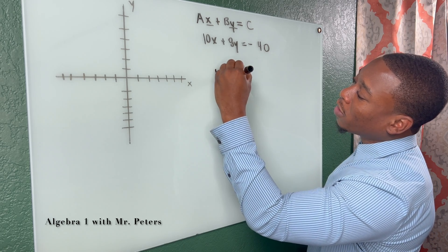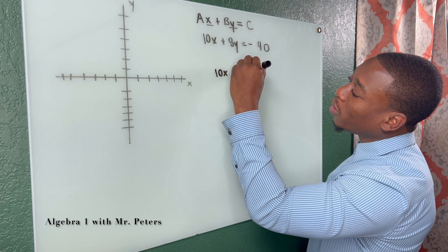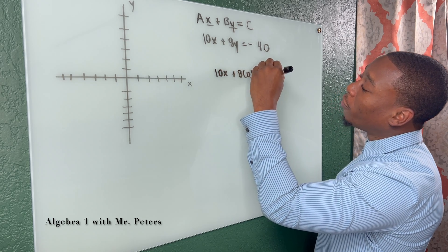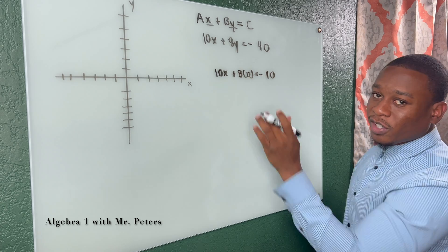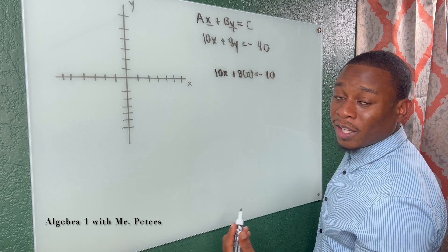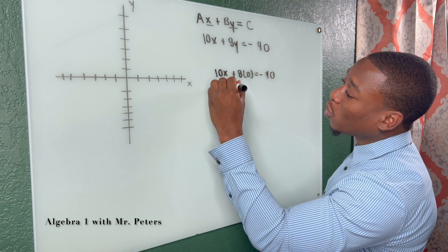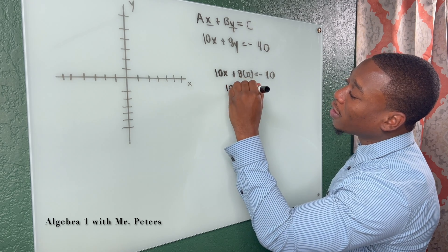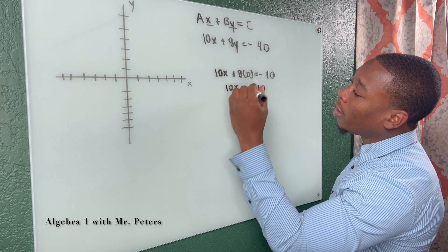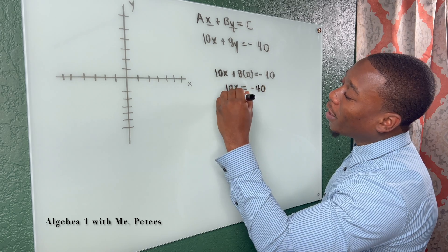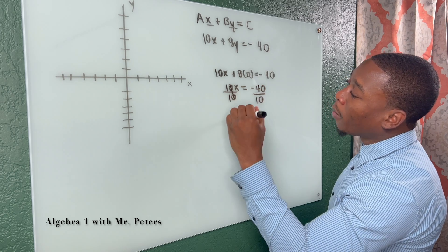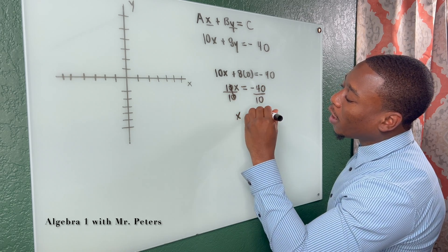So I'd have 10 times X plus 8 times zero is equal to negative 40. Because this is zero, we don't need to write that. So I simplify and have 10X is equal to negative 40. And then now when I divide by 10, X is equal to negative 4.